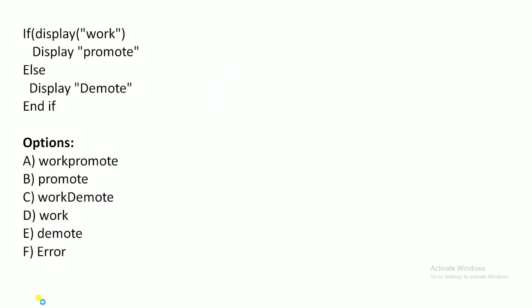The next question: if(display 'work') display 'promote' else display 'demo'. Again there is no explicit condition — it is simply displaying 'work'. Since the if block executes, it will also display 'promote'. As there is no newline or newline operation between them, 'promote' prints right next to 'work', so the output is 'workpromote'.